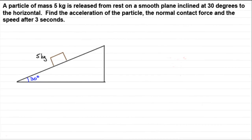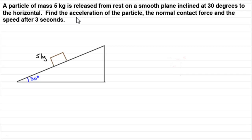Hi, welcome to another tutorial in my series on applying Newton's second law — that is force equals mass times acceleration — to a particle. In this example, we've got a particle of mass 5 kilograms released from rest on a smooth plane inclined at 30 degrees to the horizontal. We need to find the acceleration of the particle, the normal contact force, and the speed after 3 seconds. I like this example because it illustrates quite a few common features you'll find in similar problems.